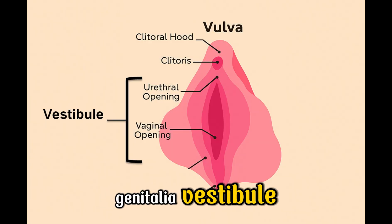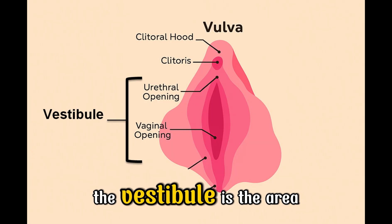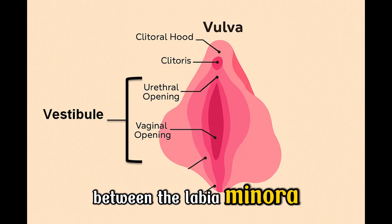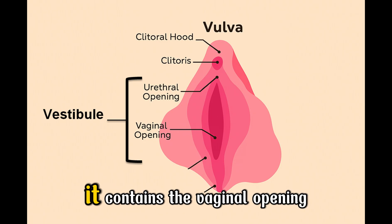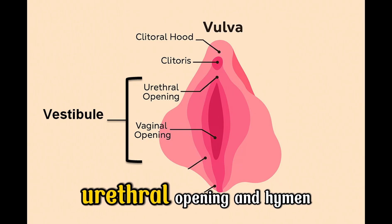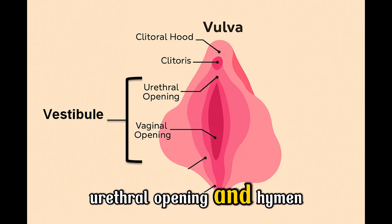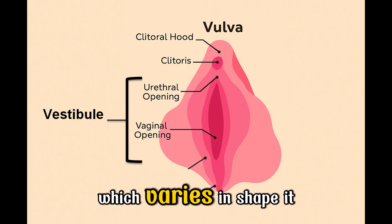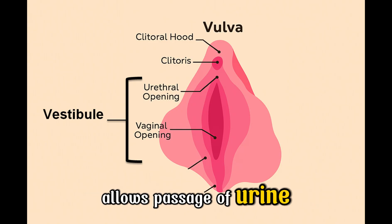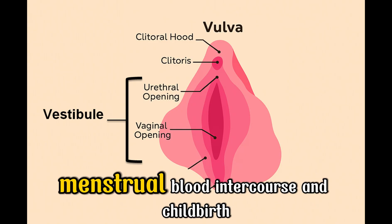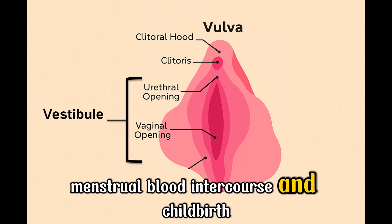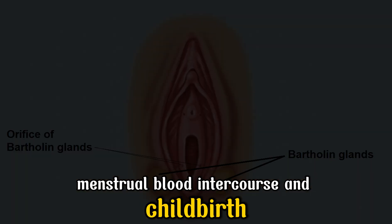Part 5 of the external genitalia: the vestibule. The vestibule is the area between the labia minora. It contains the vaginal opening, urethral opening, and hymen, which varies in shape. It allows passage of urine, menstrual blood, intercourse, and childbirth.